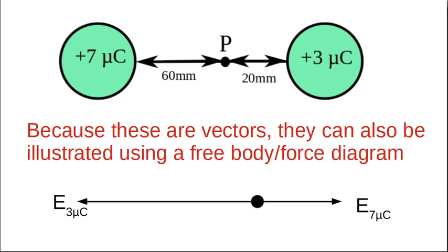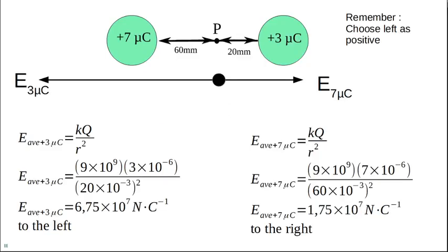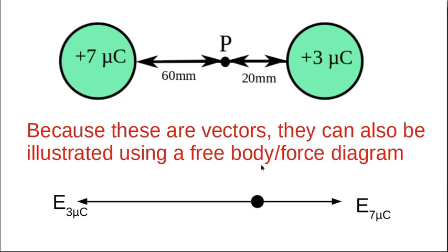Before the formula, let's look at the vector diagram. Here's point P, here are my two charges, and here are my distances. Remember, the field represents what happens to a positive charge. So if I put a positive charge at P, what will the 3 microcoulomb charge do to it?